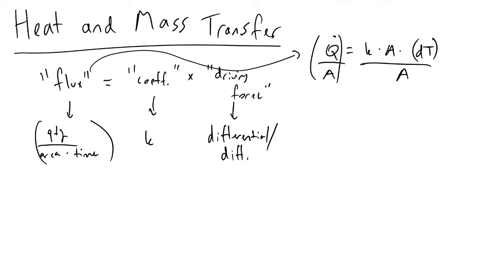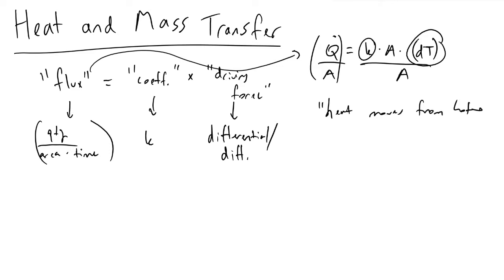So flux is equal to this coefficient times this driving force. Specifically, this heat flux is equivalent to this coefficient of heat transfer times a difference in temperature, or some kind of temperature gradient. We also remember from the fundamental laws of thermodynamics that heat is transferred from hot objects to cold objects, so we know the directionality. Heat moves from hot to cold objects.